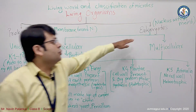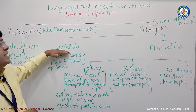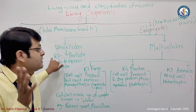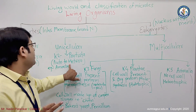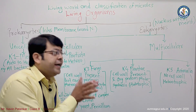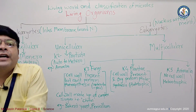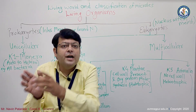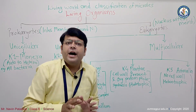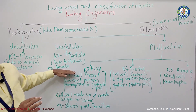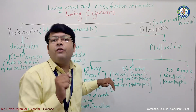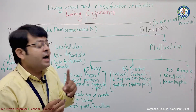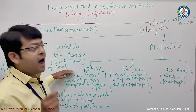Kingdom Two is Protista — these are eukaryotic and unicellular organisms. They range from autotrophic to heterotrophic and do not belong specifically to either category. A very specific and well-known example for Kingdom Two, Protista, is Amoeba.